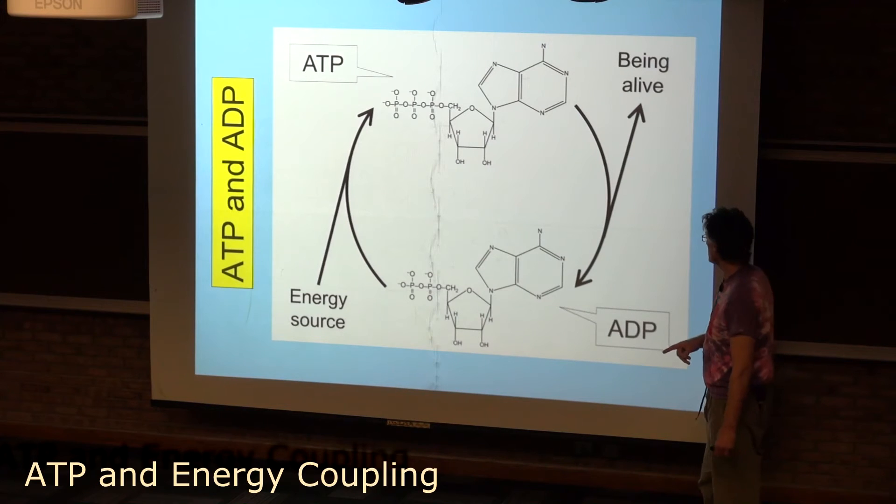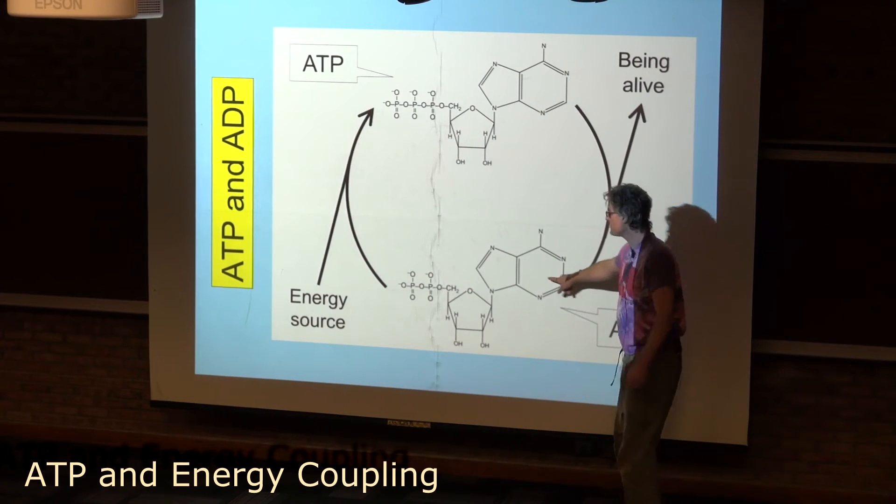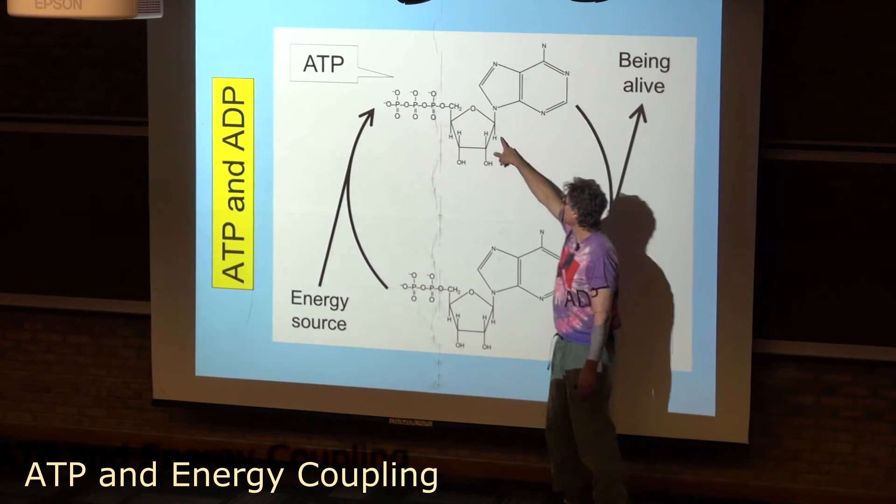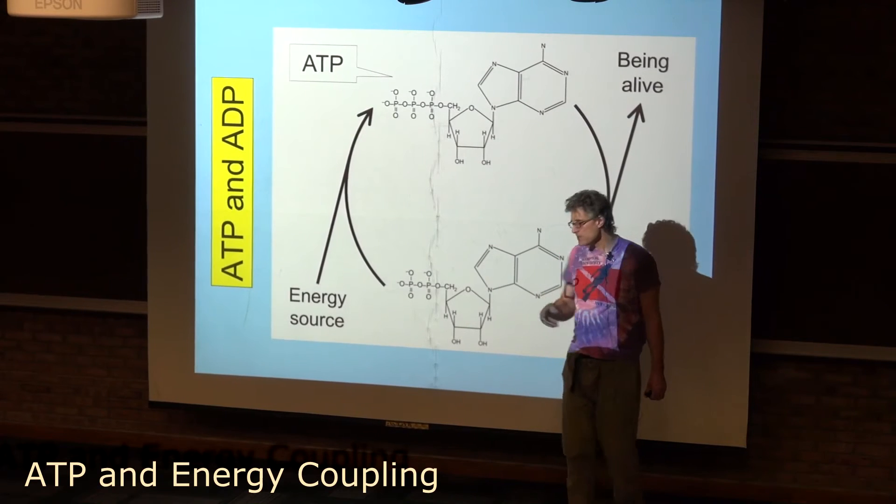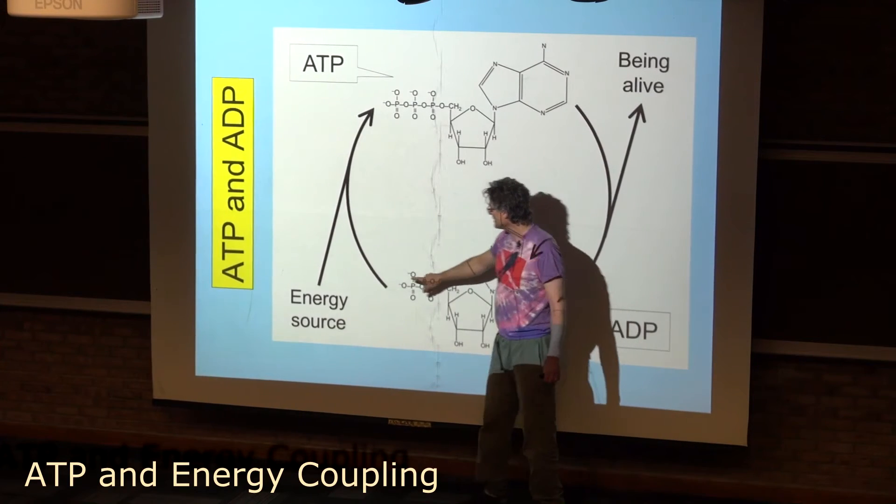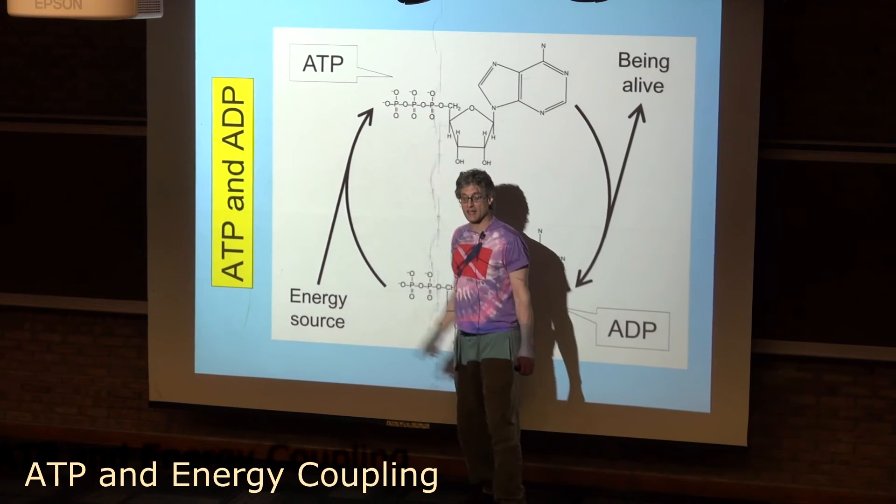And so that's what we're seeing right here. This is ADP on the bottom, and ATP on the top. The only difference is that ADP lacks that phosphate that ATP has.